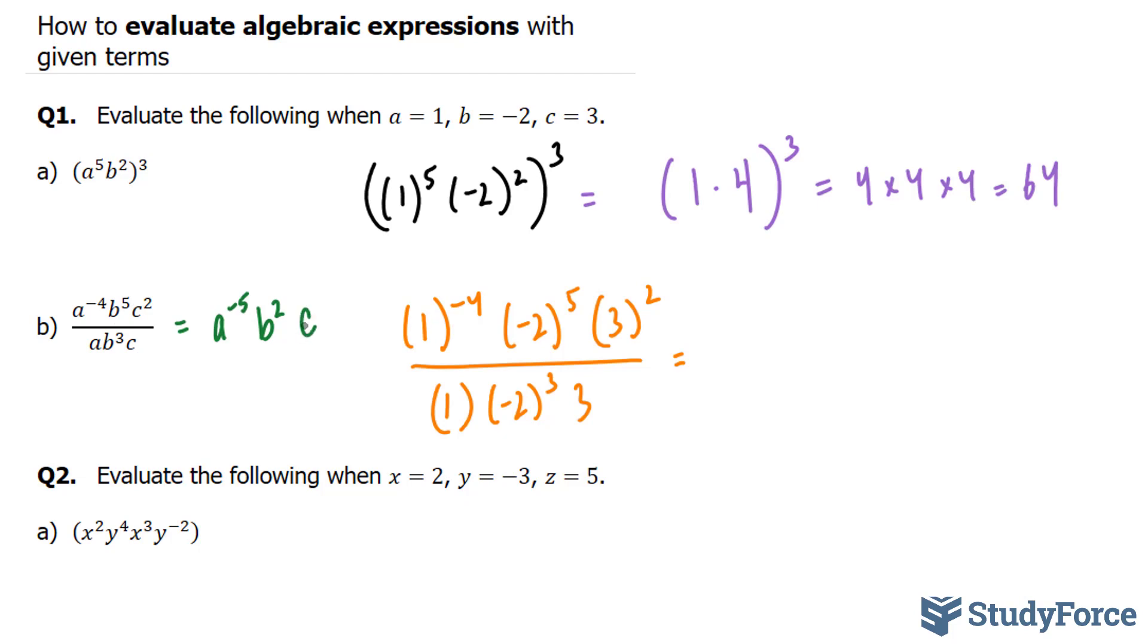So you could, by all means, do it this way first before plugging in those values. Let's continue on with this one. 1 to the power of negative 4, 1 to the power of anything is always equal to 1. So just keep that in mind. That's going to equal to 1.